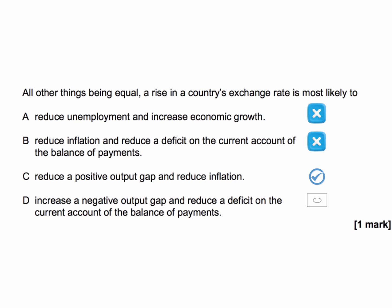Let's double-check with D: a rising exchange rate is most likely to increase a negative output gap and reduce the deficit on the current account. Well, it will increase a negative output gap if the output gap is negative, because the economy will slow down. But it's unlikely to reduce the deficit on the current account because of the impact of falling exports and rising imports. So C is the most likely and correct answer.